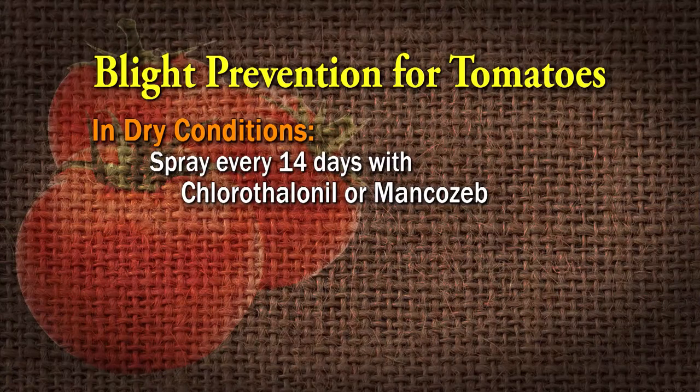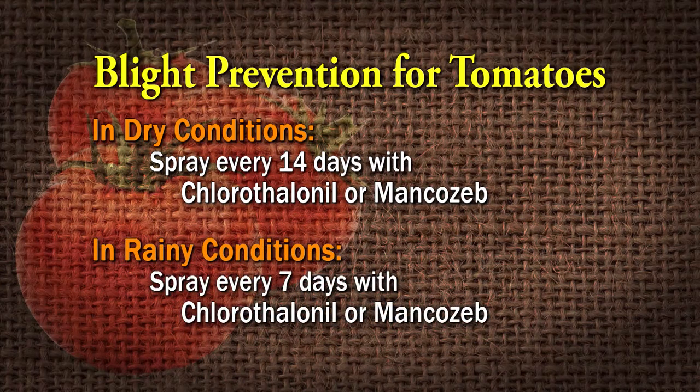Spray during dry conditions every 14 days with either chlorothalonil or mancozeb. If it's during rainy conditions and you haven't gotten more than two inches of rain, you can still spray about every seven days. If it rains more than two inches, you assume it washes the fungicide off. If you apply the fungicide today and it rains tomorrow — say a half inch rain — just stick to the seven-day schedule, provided the fungicide had time to dry on the plant.